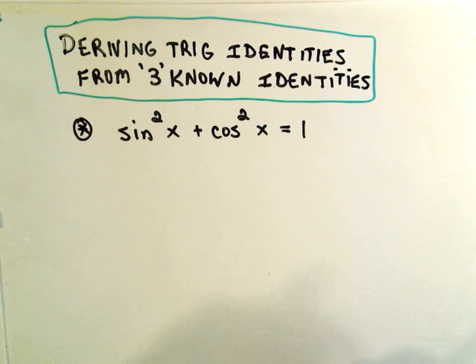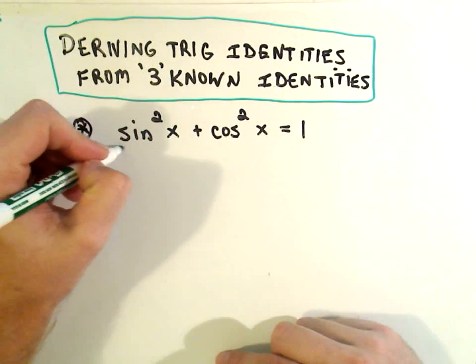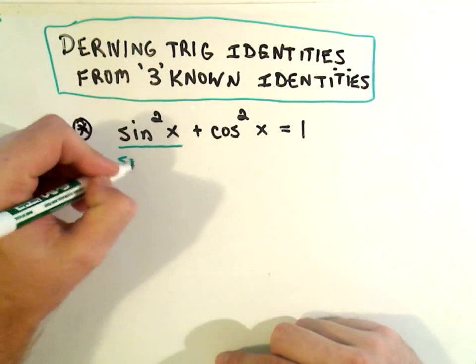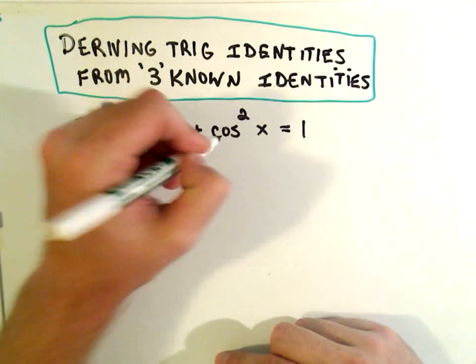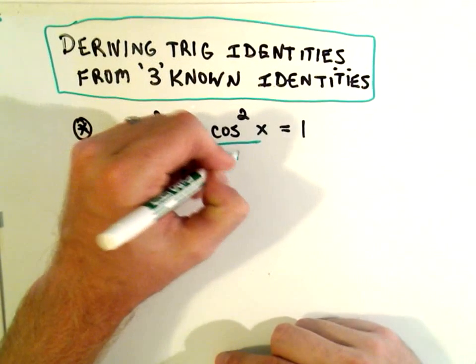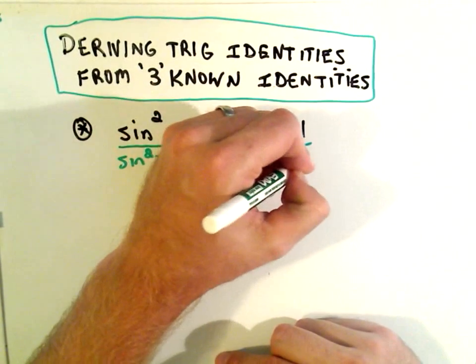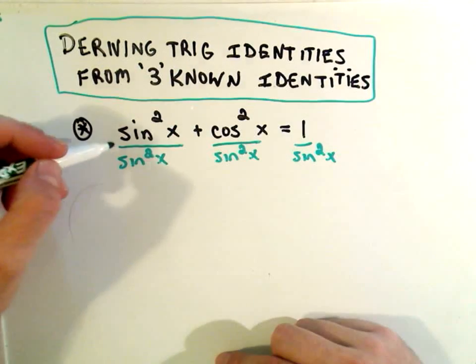The first thing—this is assuming again you know that tangent is sine over cosine, cotangent is cosine over sine, etc.—the first identity you can get is by taking this identity and dividing everything by sine squared.